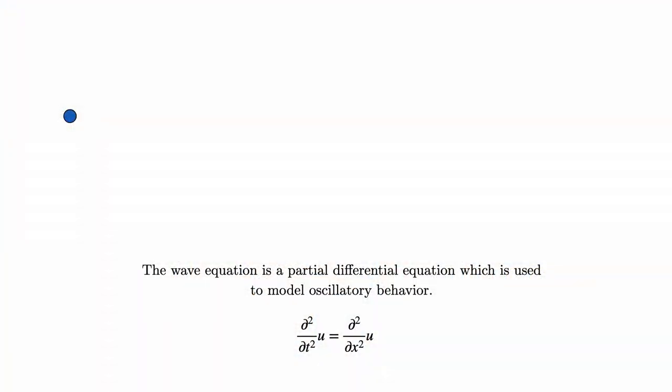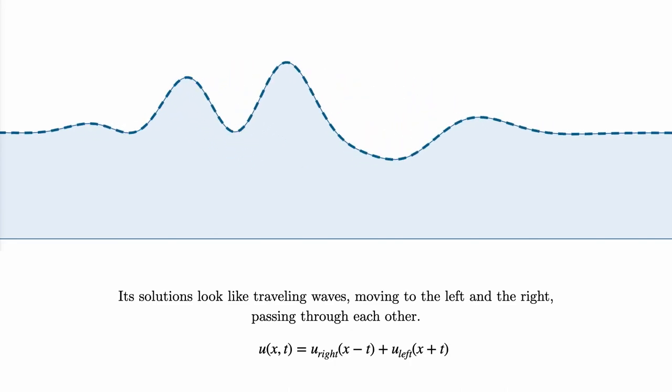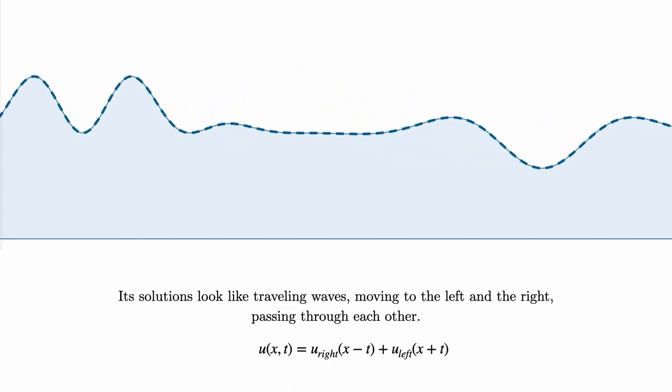The wave equation is one of the most important examples of a partial differential equation. And, true to its name, it is used to model wave-like behavior. To give some intuition, the solutions to this equation look like ripples on the surface of water, moving to the left or to the right, passing through each other.